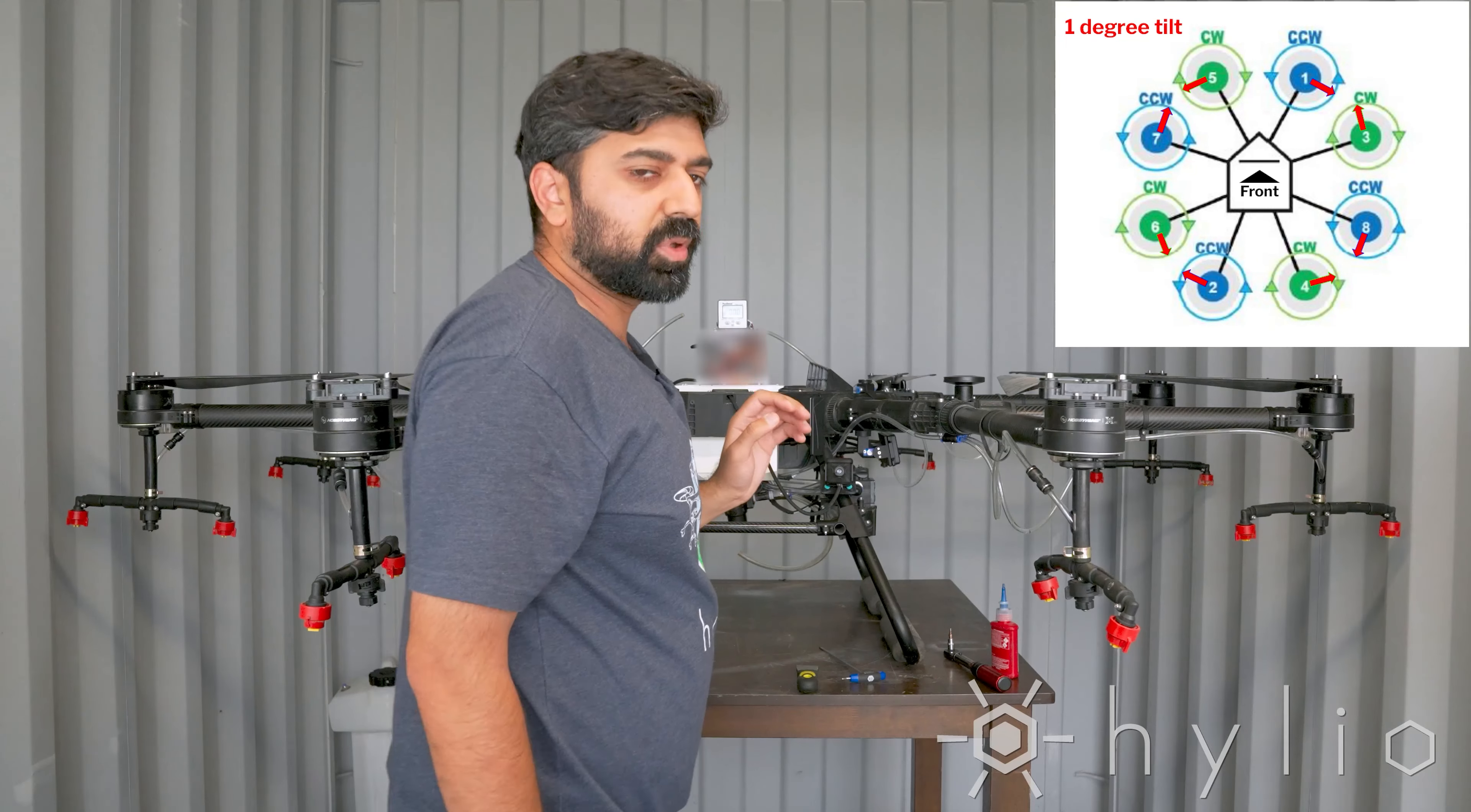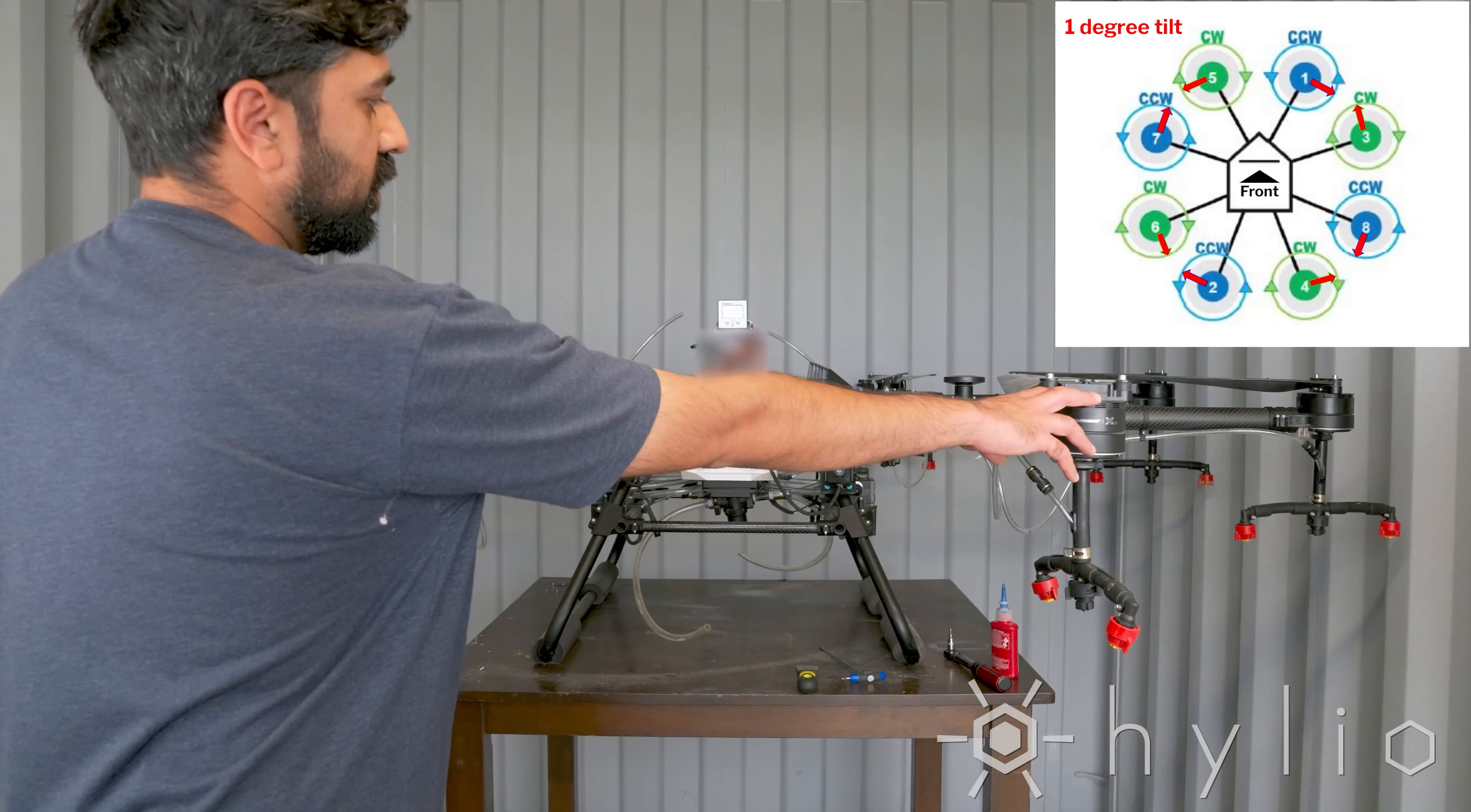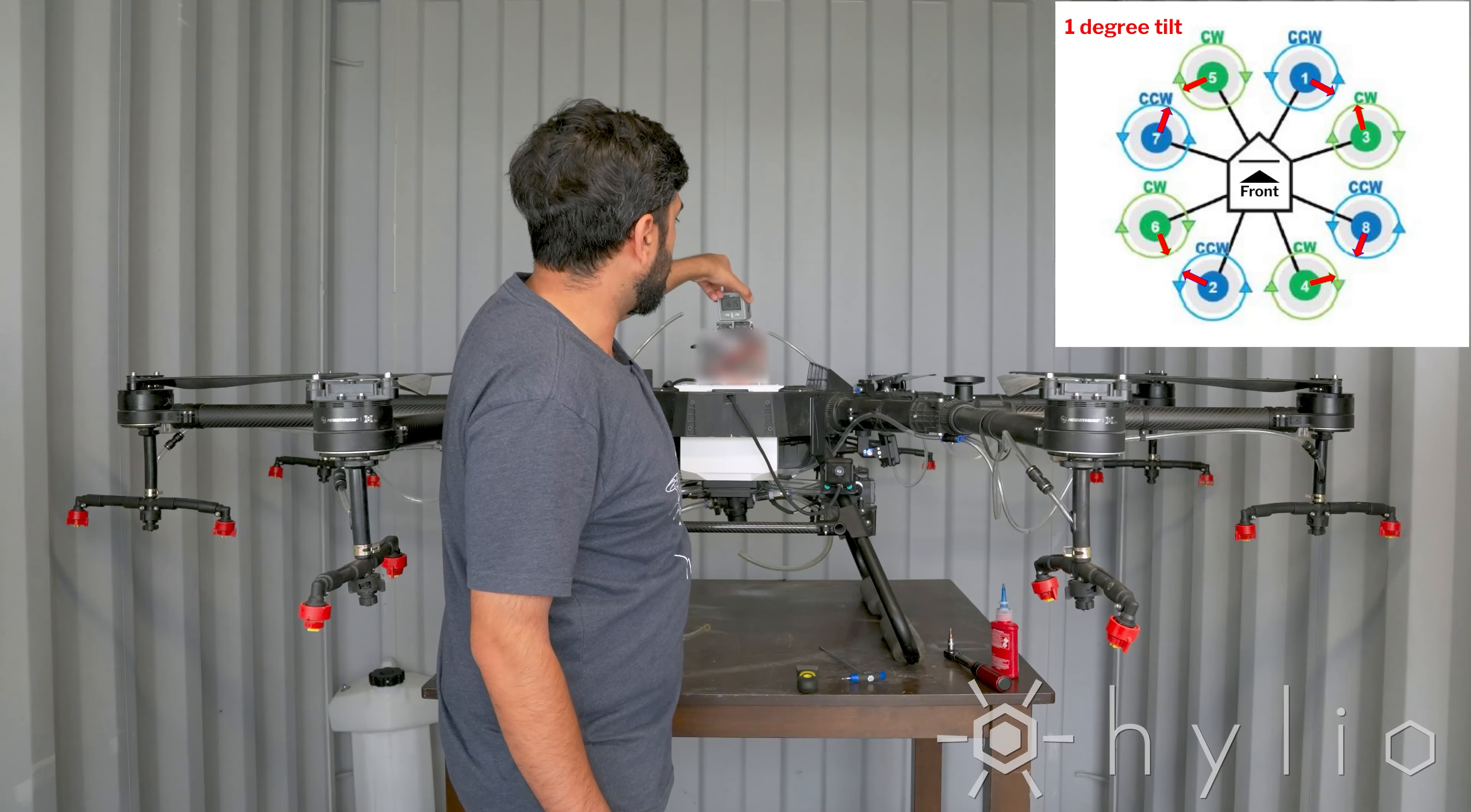This is a very important step. You're going to have to replace the level four times for each of the four directions. As is right now, that can be used to level just these front two motors, motor one and motor five. To do that side, you'll have to replace the level and hit zero again, and then repeat the process for all four sides.